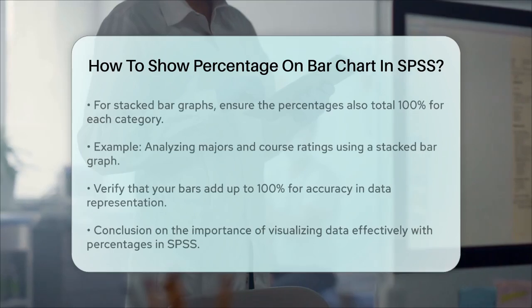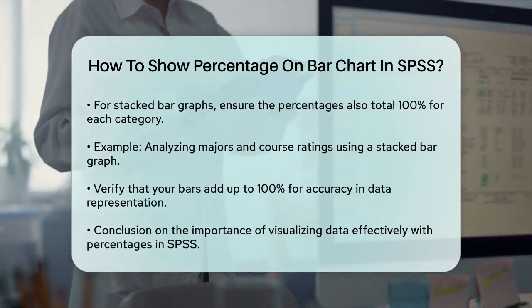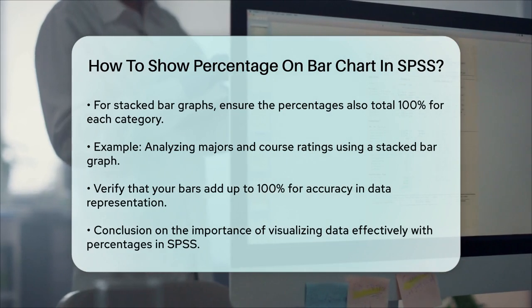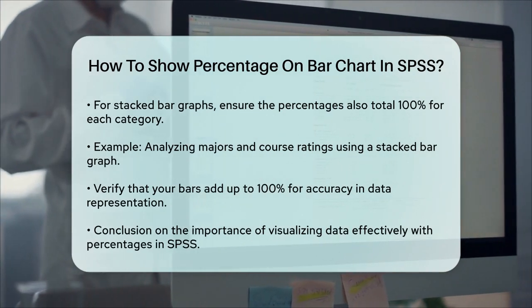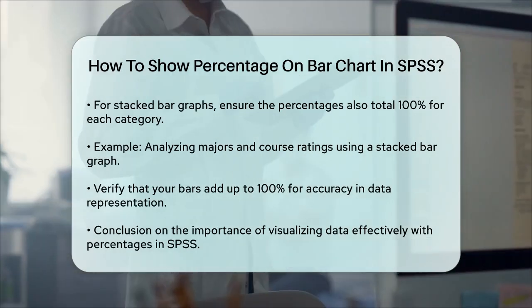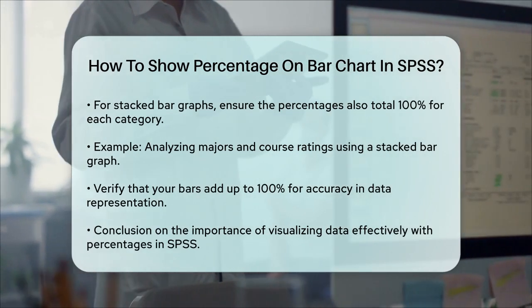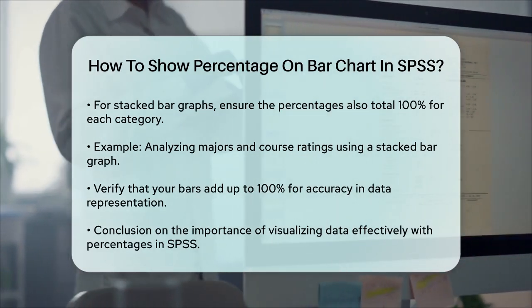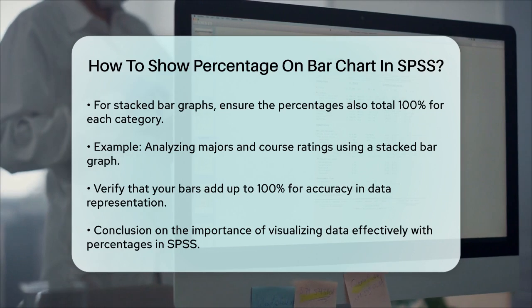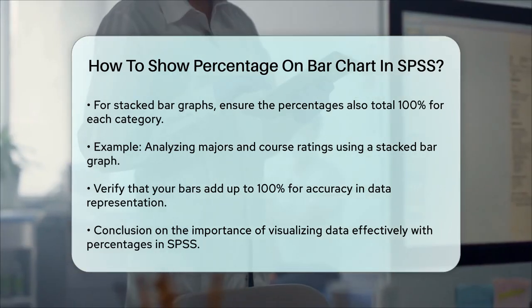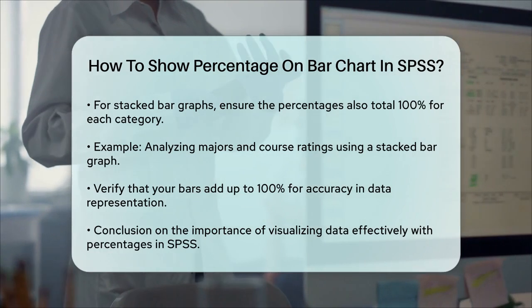Here's an example to make it clearer. If you're analyzing how different majors rate a course, you can create a stacked bar graph where each bar represents a major, and the sections within each bar show the percentage of students from that major who gave different ratings. This way, each bar will add up to 100%, making it easy to compare the distribution of ratings across different majors.